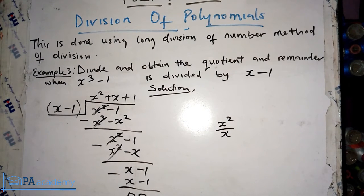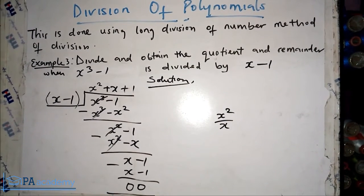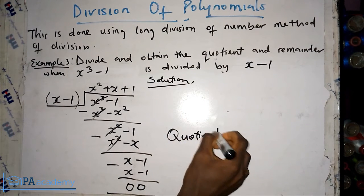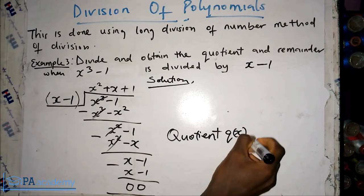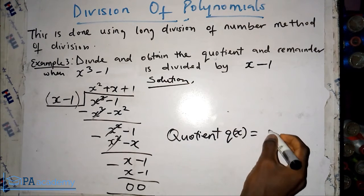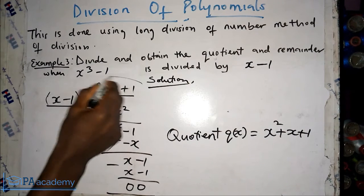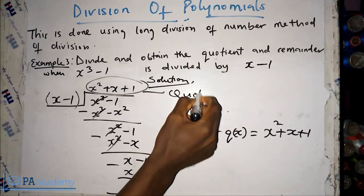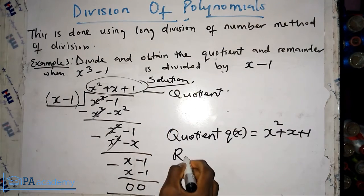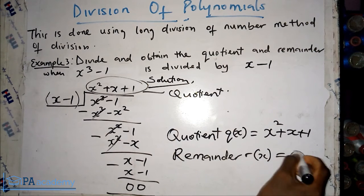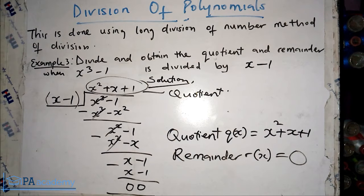So for Example 3, our quotient q(x) equals x² plus x plus 1, and our remainder r(x) equals zero. That completes Example 3. Now let's look at Example 4.